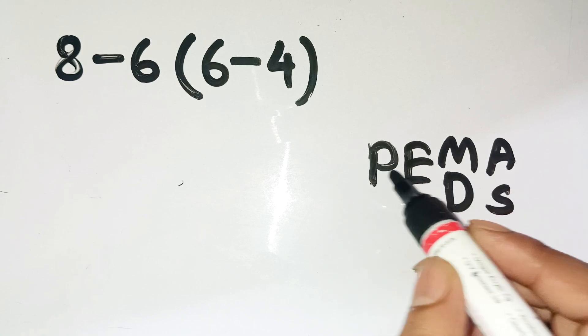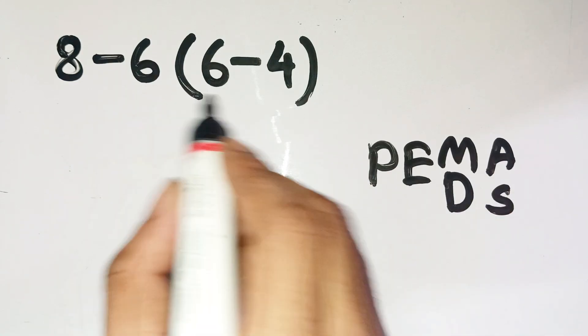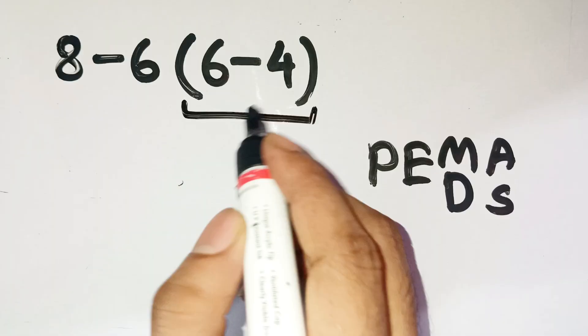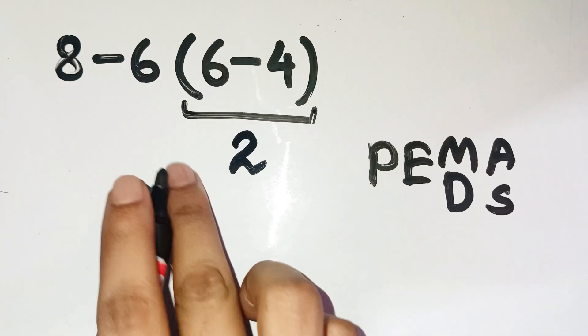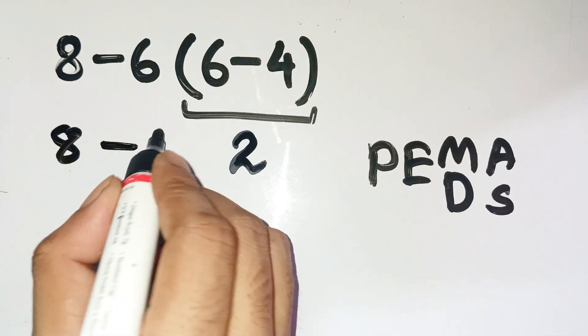Parentheses always come first, so we start there. Inside the parentheses, we've got six minus four, which is two. Okay, now our equation becomes eight minus six times two.